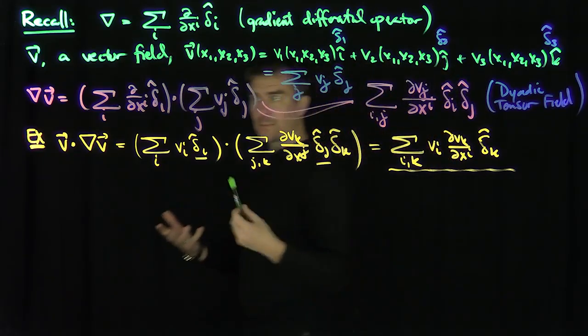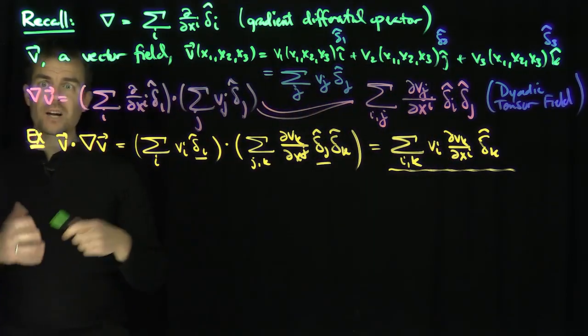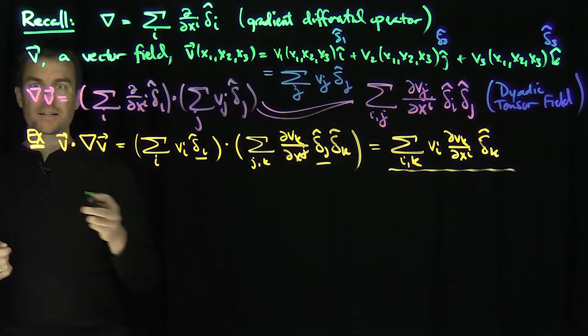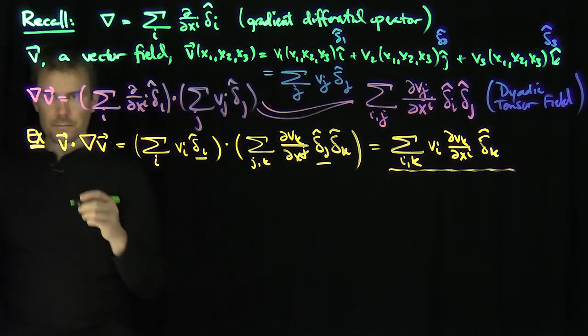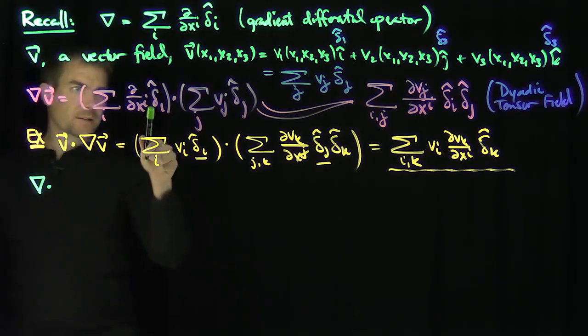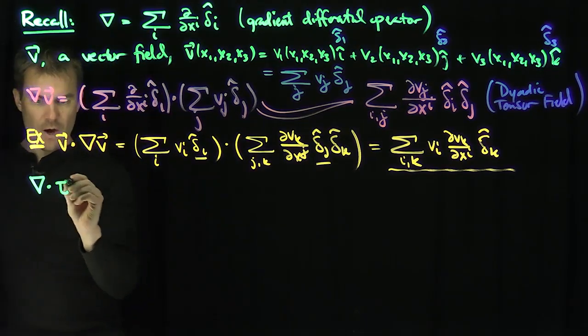Now I can do the same sort of thing using these vector operations to talk about the gradient dot a dyadic tensor. So let's do that. If I did gradient single dot tau bar bar, that's going to be a vector field.